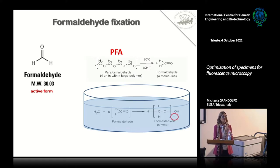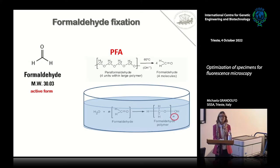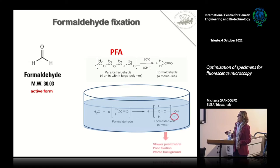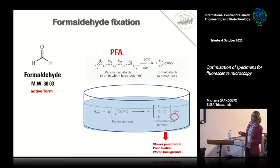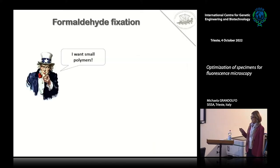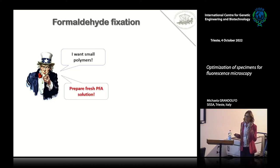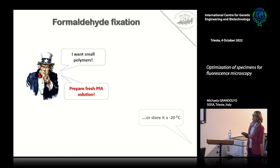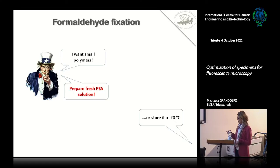Do not leave it on the shelf, do not leave it in the fridge. This is absolutely compulsory if you need to work with animals and perfuse them, otherwise the quality of your tissue will be absolutely horrible. Remember that if you have polymers, you will have slower penetration, poorer fixation, and even worse background in your tissue or sections. If you know you don't have time to prepare fresh PFA, prepare it in advance and then store it at -20°C, which preserves the single active forms.